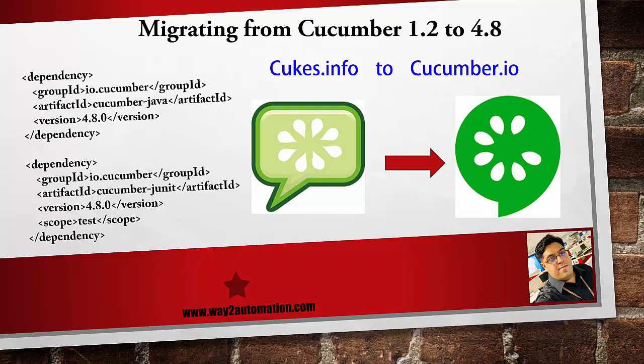Hi all, this is Rahul from Way to Automation. In this lecture we'll be discussing how to migrate our existing Cucumber 1.2, that is the info.cukes project, to the latest Cucumber IO library which is at version 4.